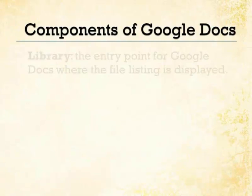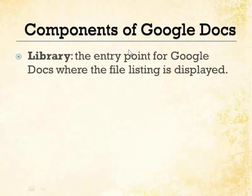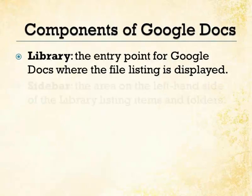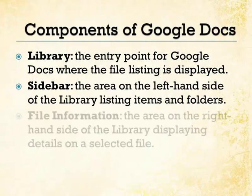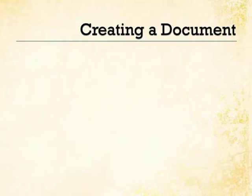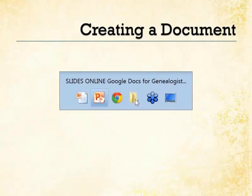What is the library? That's basically where the Google Docs files are displayed. The sidebar, remember on the left, shows you different items in terms of folders, things that are shared, things that are private. And then on the right, you have file information for each file that you're selecting in the library. Let's go ahead — I'm going to go over here live.